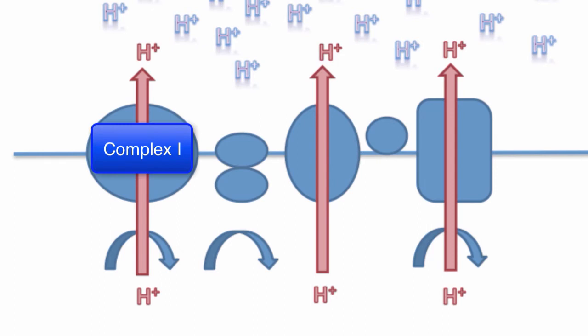Complex 1 uses NADH to transport the protons up. This converts the NADH back into NAD, where it can be used again by glycolysis and the Krebs cycle to carry another hydrogen. When complex 1 carries the hydrogen, it splits the proton from the electron and sends the proton through the membrane and the electron to coenzyme Q.